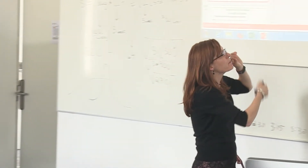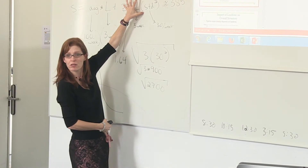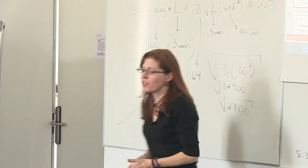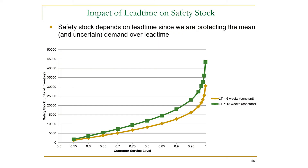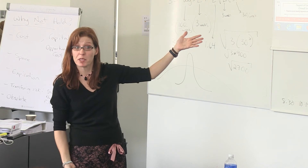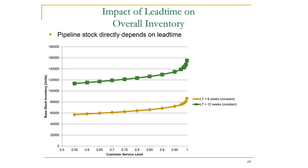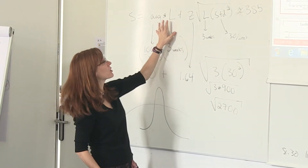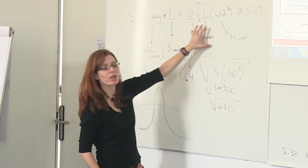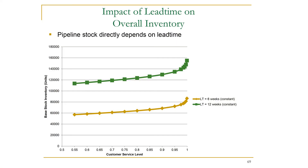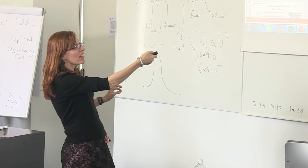Here's the next picture — the same buffer portion, but for two different lead times: 6 and 12. The buffer for uncertainty is bigger when my lead time is bigger. This next picture shows the entire reorder point S, including the basic amount to cover the lead time plus the buffer for uncertainty, for lead times of 6 and 12. That's about twice as much inventory, with a little extra on the right at higher service levels.